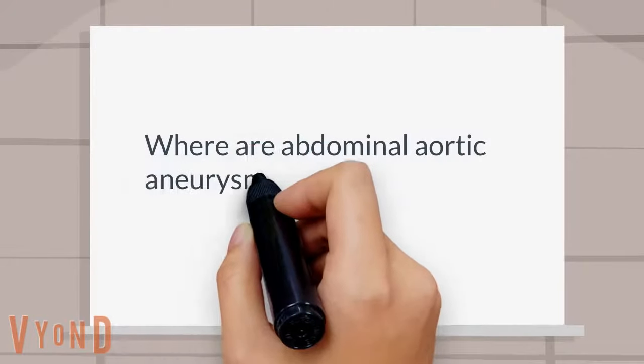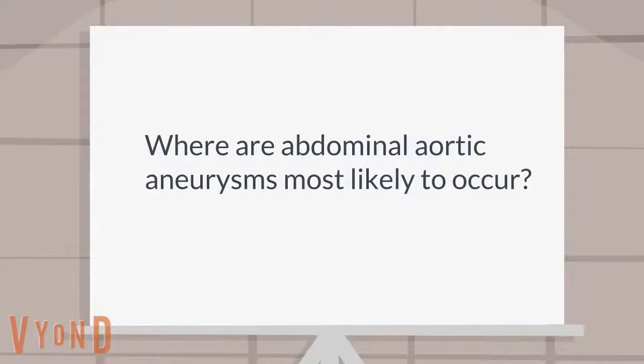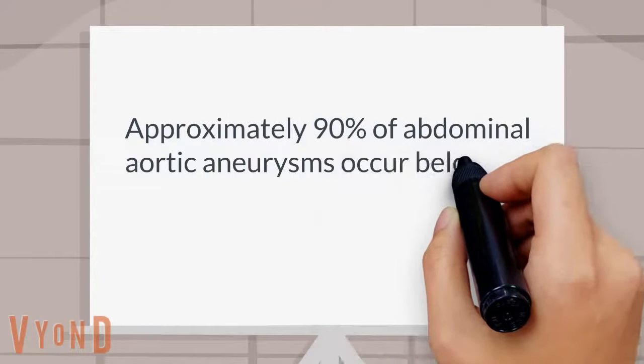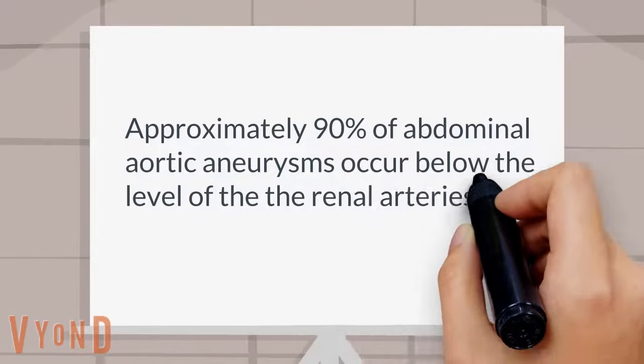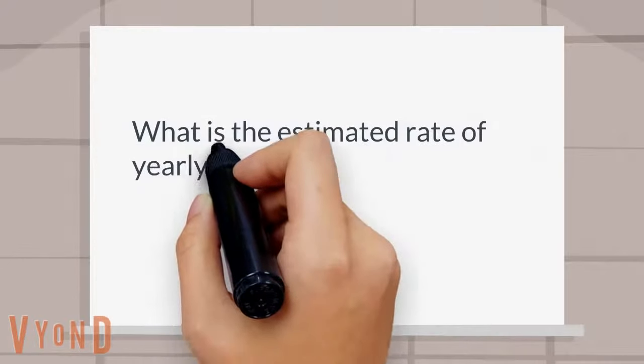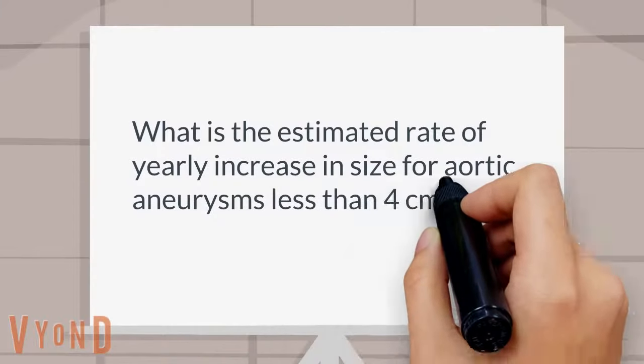Where are abdominal aortic aneurysms most likely to occur? Approximately 90% of abdominal aortic aneurysms occur below the level of the renal arteries. What is the estimated rate of yearly increase in size for aortic aneurysms less than 4 centimeters?